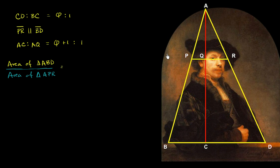This right over here is a self-portrait that Rembrandt made in 1640. What's really interesting about it is that, like other great artists such as Leonardo da Vinci and Salvador Dali and many others, Rembrandt really cared about something called the golden ratio.